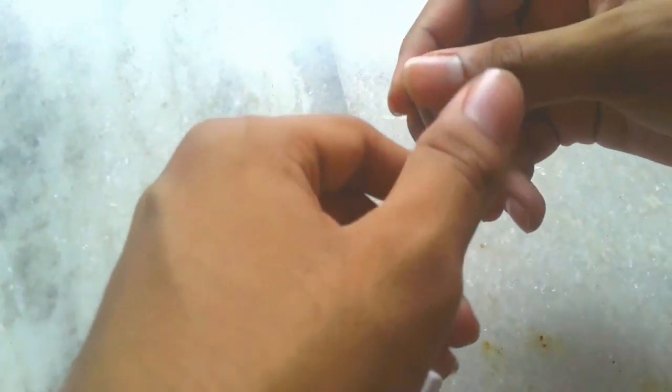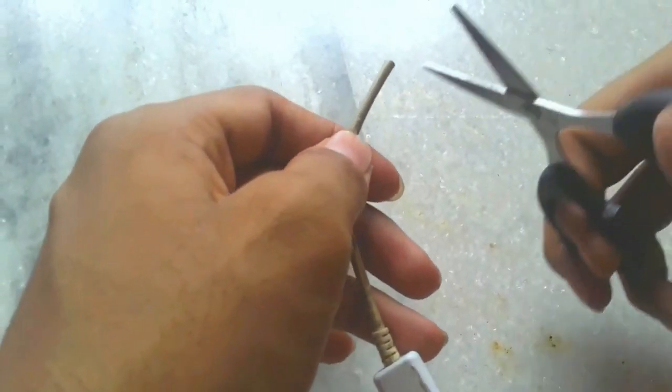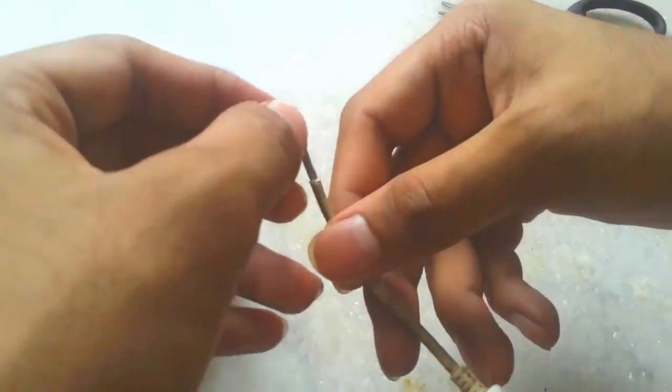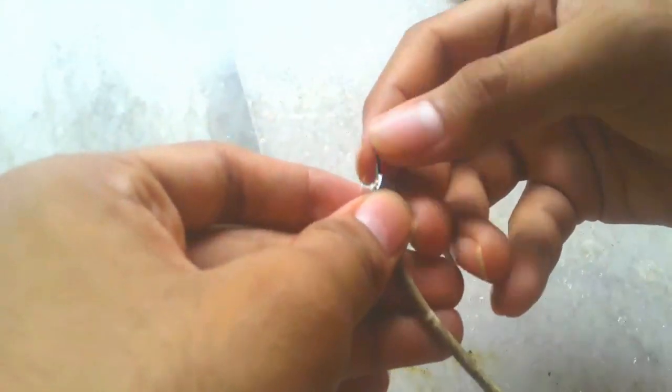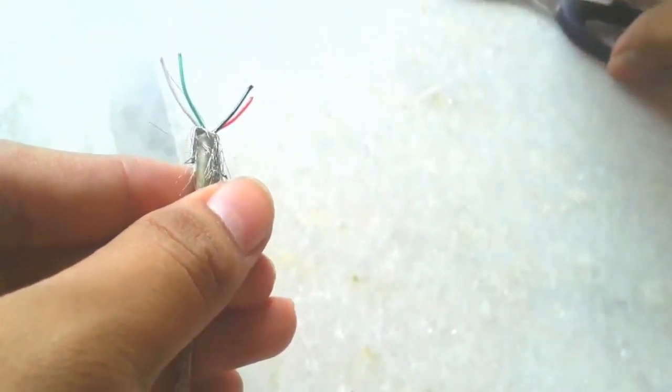After that, peel the upper layer of the USB cable. Here you will see four types of cables: green, yellow, red, and black. Cut the green and yellow one.